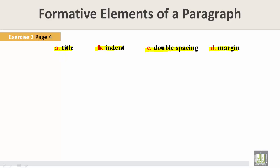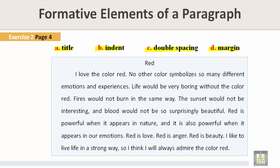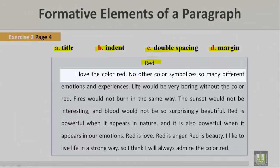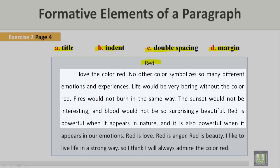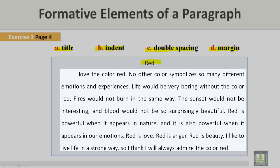Let's take a look at the paragraph. This paragraph is about the color red. I'll read the paragraph for you before we begin. I love the color red. No other color symbolizes so many different emotions and experiences. Life would be very boring without the color red. Fires would not burn in the same way. The sunset would not be interesting. And blood would not be so surprisingly beautiful. Red is powerful when it appears in nature, and it is also powerful when it appears in our emotions. Red is love. Red is anger. Red is beauty. I like to live life in a strong way, so I think I will always admire the color red.